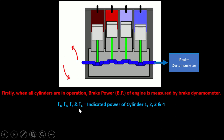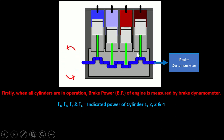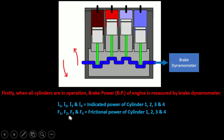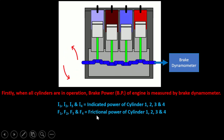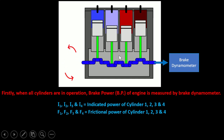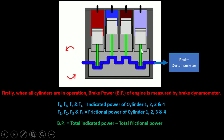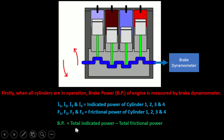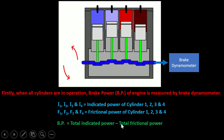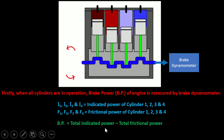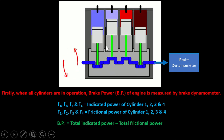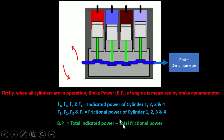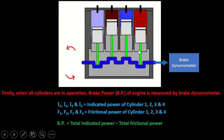We will use I1, I2, I3, and I4 as the indicated power of cylinders 1, 2, 3, and 4. Similarly, we will use F1, F2, F3, and F4 as the frictional power of cylinders 1, 2, 3, and 4. For finding total indicated power, we add the indicated power of all the cylinders. For finding total frictional power, we add the frictional power of all the cylinders.